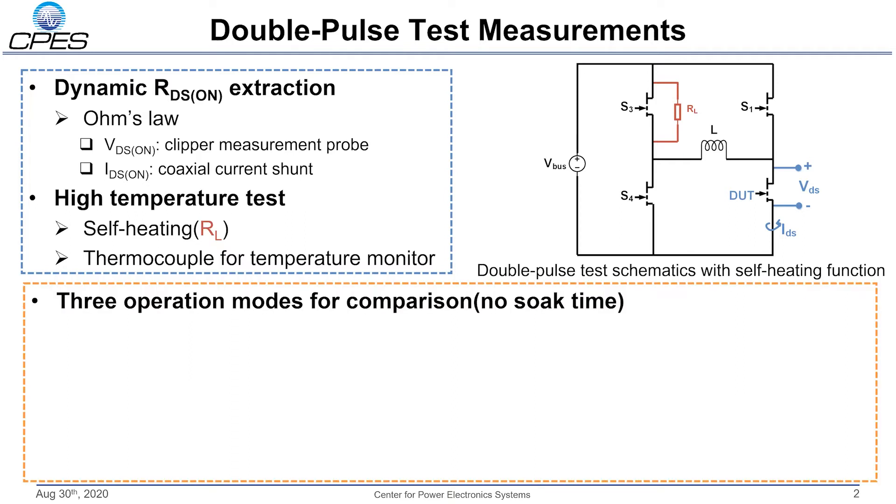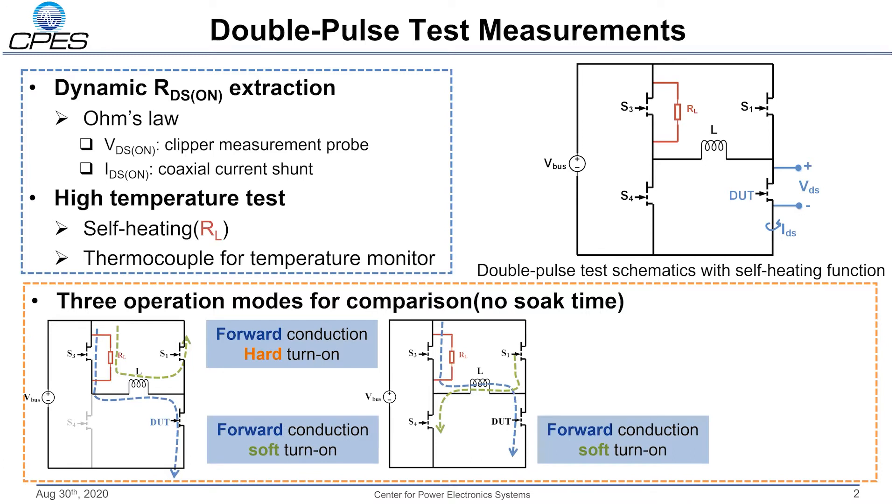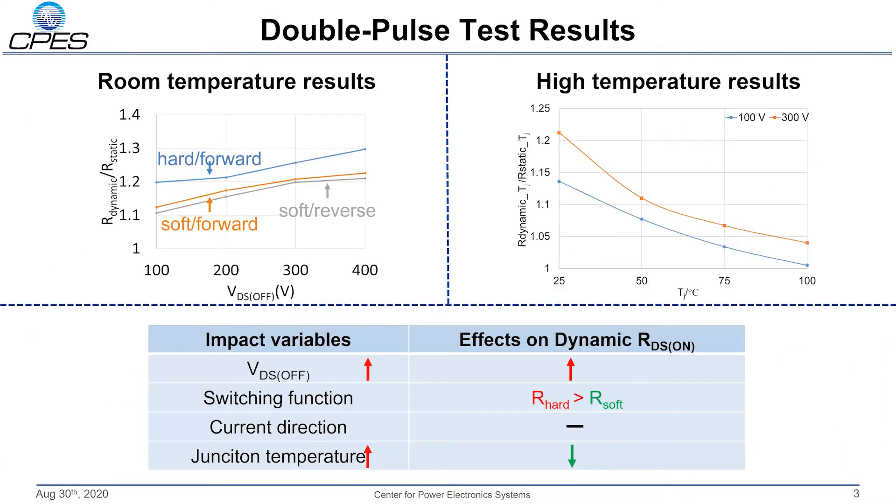In order to verify different impact factors, three operation modes are designed to compare the impact of conduction direction and switching function. Different off-state voltages are tested in all three operation modes, and the results are shown in the left figure. The ratio of dynamic over static RDS(ON) above 1 represents this phenomenon. It is apparent in this plot that the higher the off-state voltage is, the larger this ratio will be.